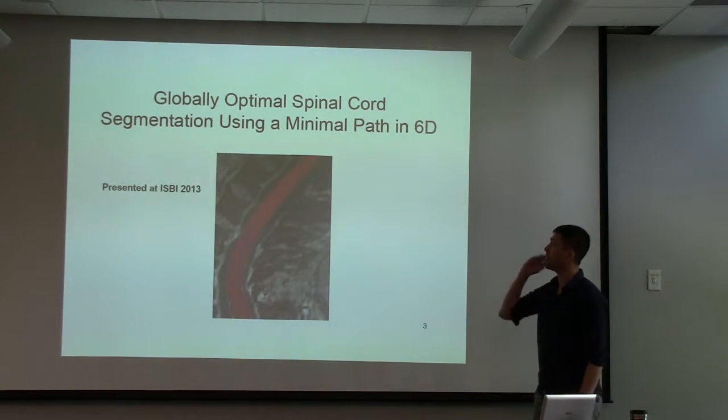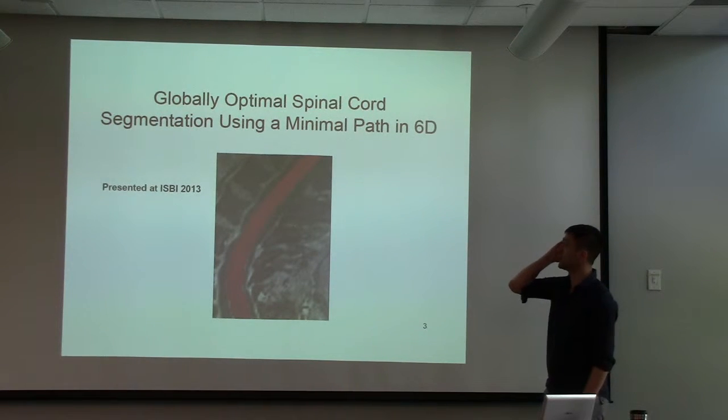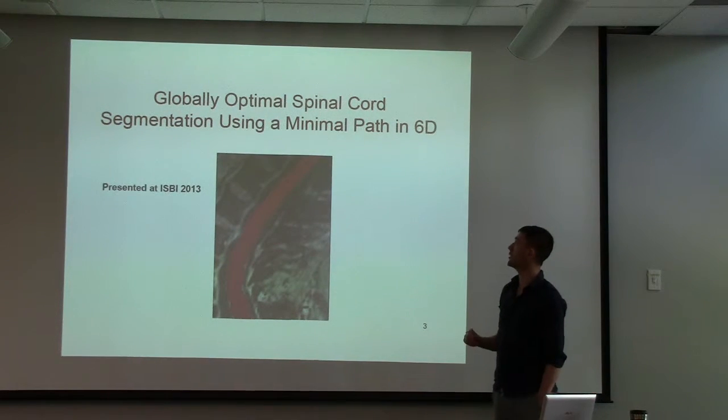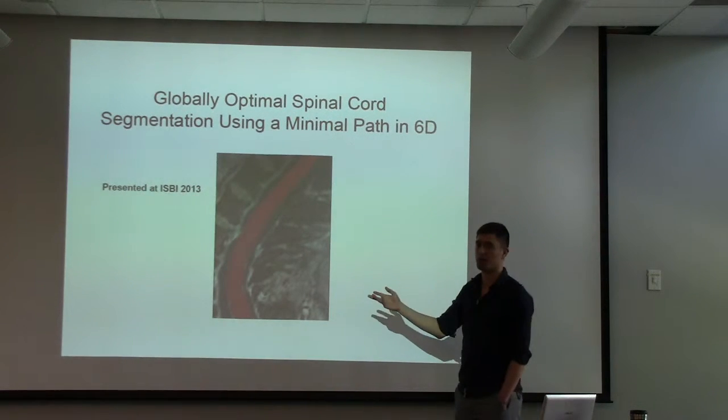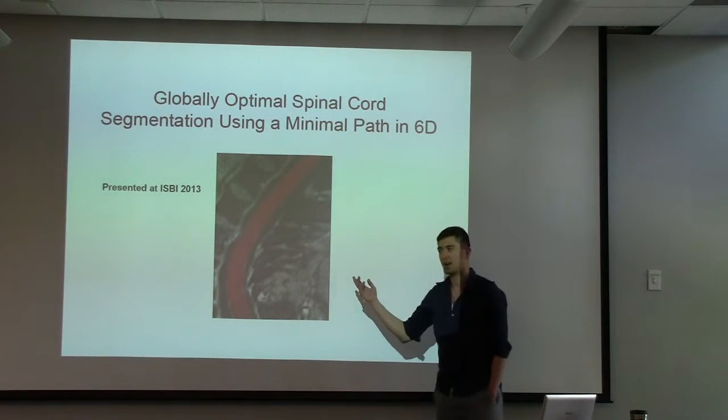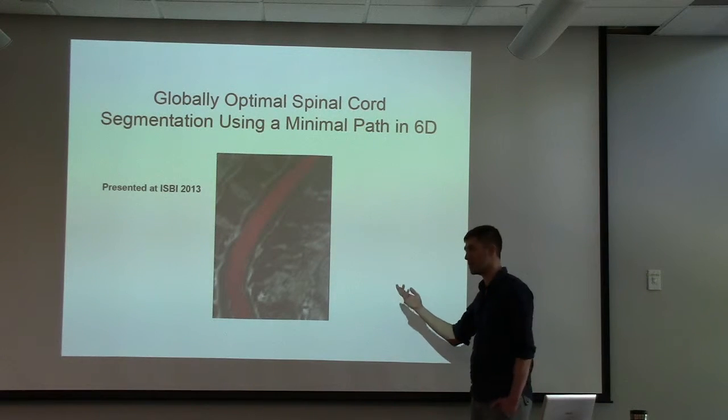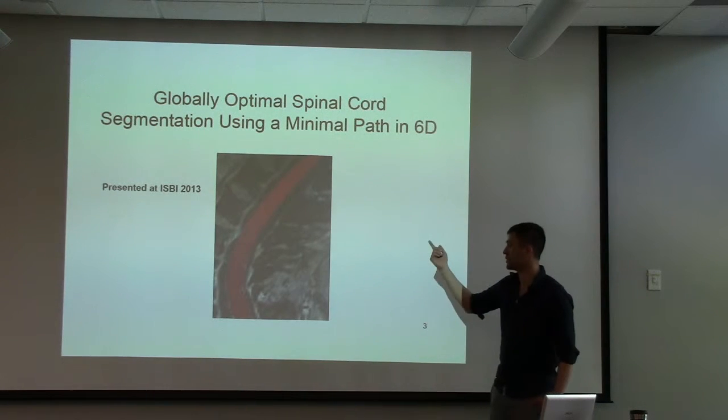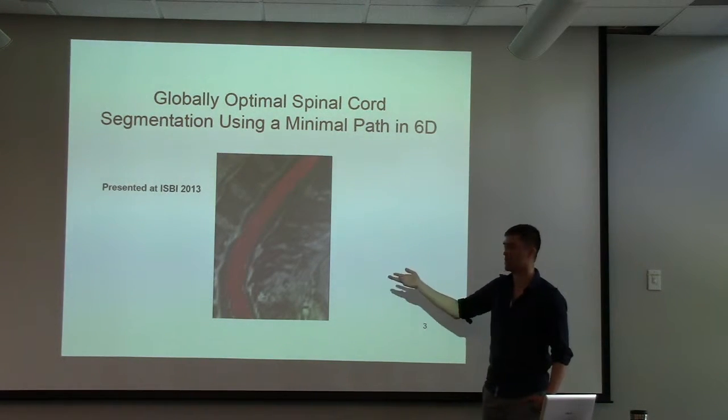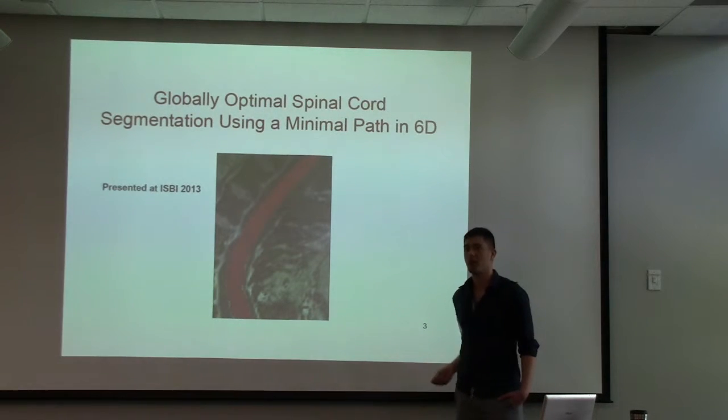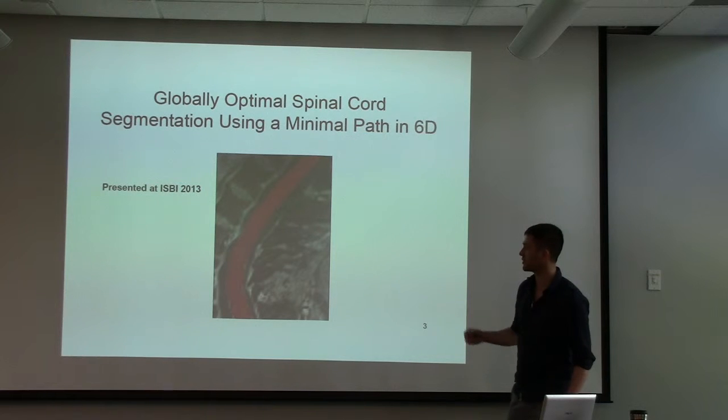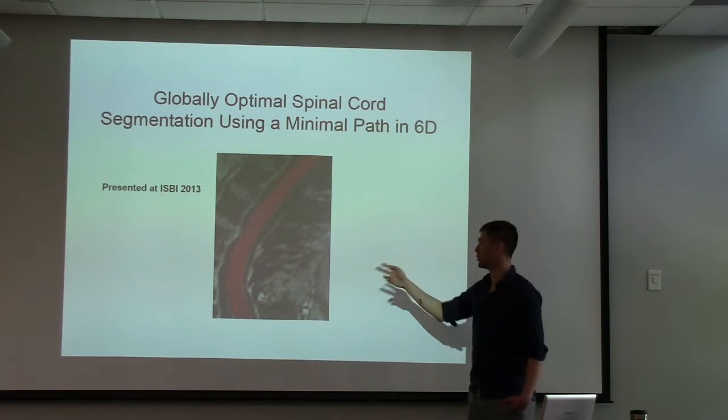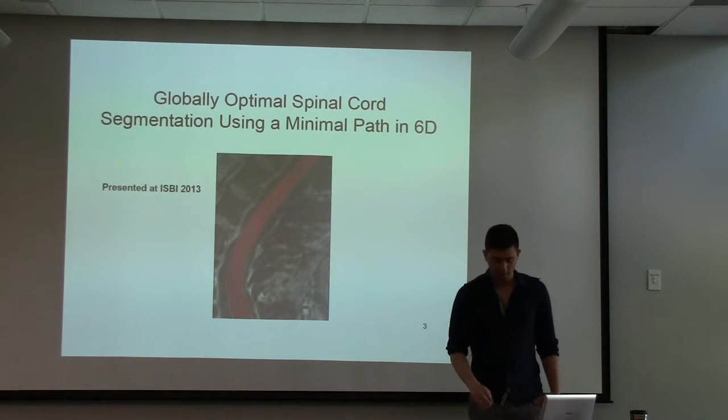So the first one will be on globally optimal spinal cord segmentation using a minimal path in six dimensions. Just to make sure that we're all clear what segmentation is, I think of it as a labeling problem where you have an image with voxels and you want to mark some of those as your object and some as background. So here we have the spinal cord marked in red on the background there.